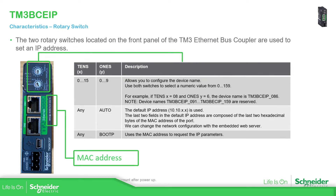These two rotary switches allow us to identify the device in our network. If we use these numbers in the tens position and these numbers in the ones position, this means the configuration will come from DHCP. Here you can see some examples of the configuration.